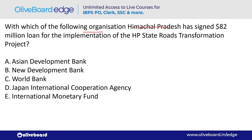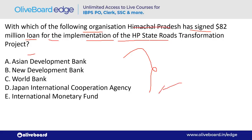With which organization did Himachal Pradesh sign an $82 million loan? The answer is the World Bank — option C.